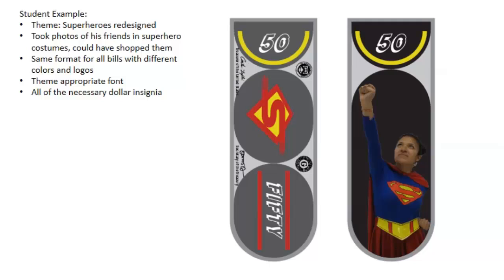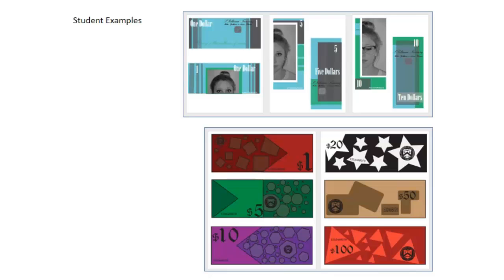Here's the student example — a really good one. They chose superheroes, so they redesigned every superhero logo and then took photos of their friends in superhero costumes. This student was able to get costumes from a theater department or something, and then did the redesigns in Illustrator and combined them for his money. It's unified by that theme of superheroes and it was rather easy to shoot and pretty straightforward.